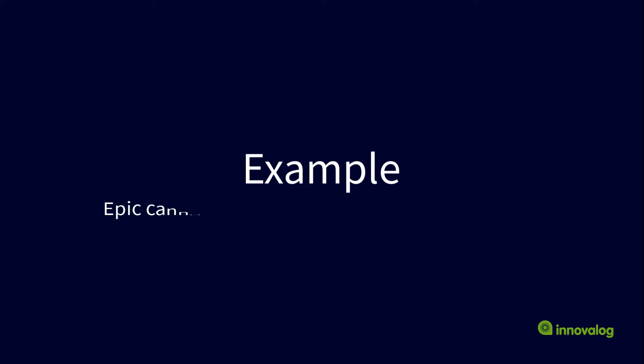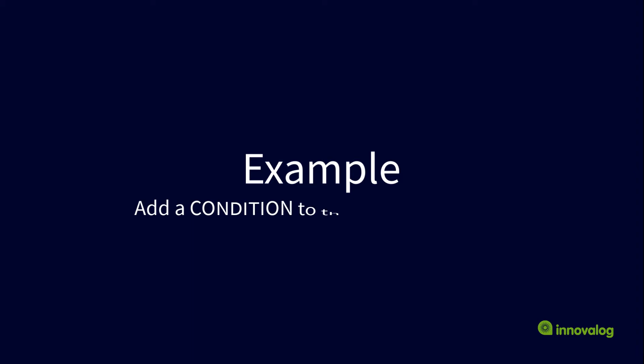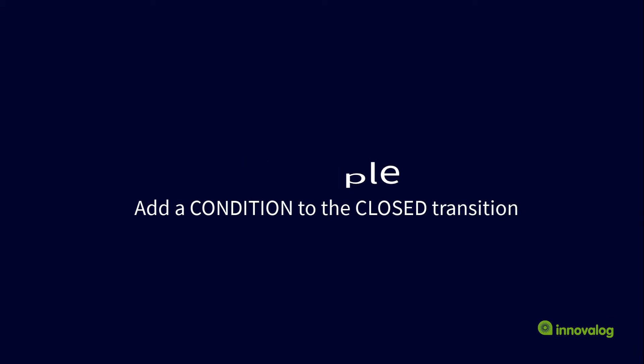Let's have a look at a common requirement. Imagine you have epics and each epic contains multiple stories, and you need to make sure that an epic cannot be closed until all its stories are closed. To achieve this, we're going to be adding a condition to our closed transition.